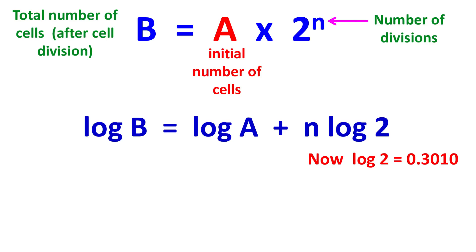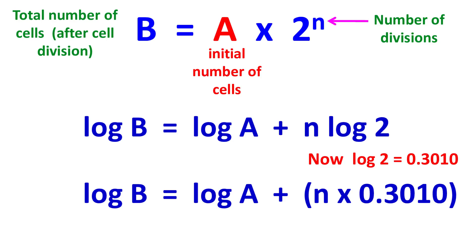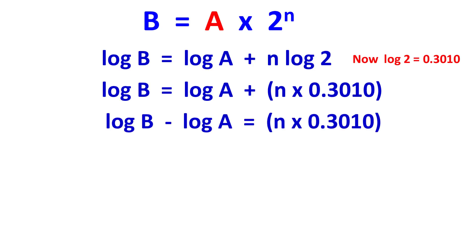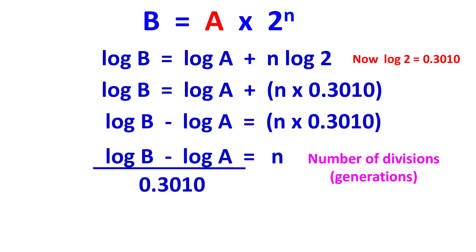Hence, log B equals log A plus n into 0.3010. So the number of generation or the total number of division n equals log B minus log A upon 0.3010.